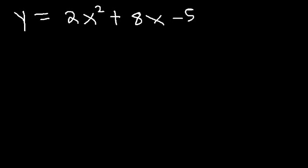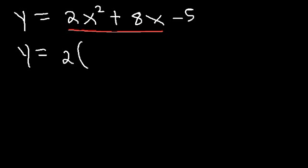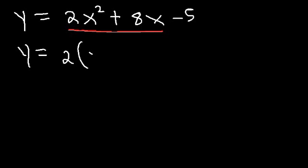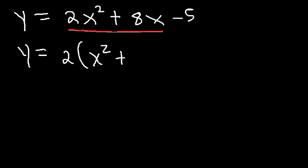Let's use the completing the square technique first, then we'll use the other technique as well. Notice that this time the leading coefficient is 2. Whenever you see that, you need to take out the GCF from the first two terms. So if we take out a 2, we get x squared plus 4x inside the parentheses. Let's leave a space.